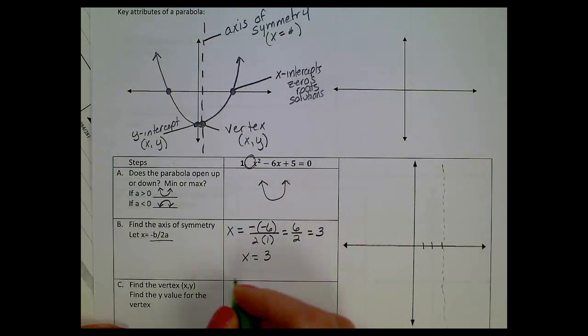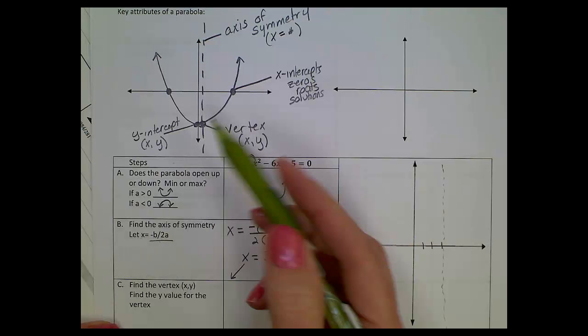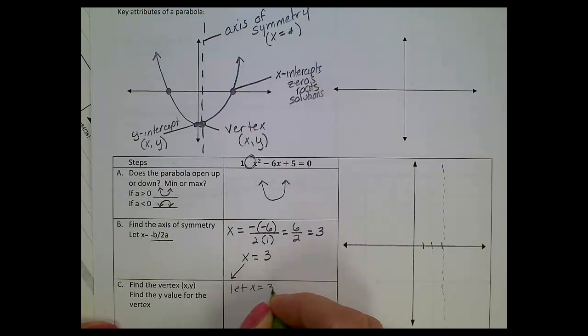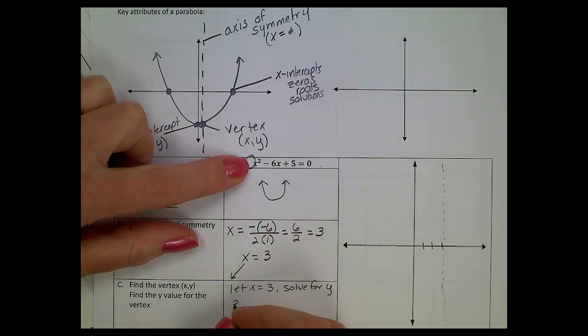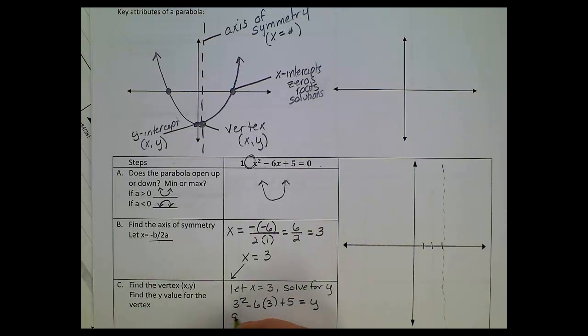Now, to find the vertex, we actually use that axis of symmetry, because it is at the bottom point of our parabola. So we're going to let x = 3 and solve for y. Back to the original equation, we'll plug 3 in for x: 3² - 6(3) + 5. Instead of setting it equal to zero, we're trying to find a y value. We'll get 9 - 18 + 5 = y. Nine minus eighteen gives negative nine plus five equals y, eventually y = -4. So the value for my vertex is ordered pair (3, -4).